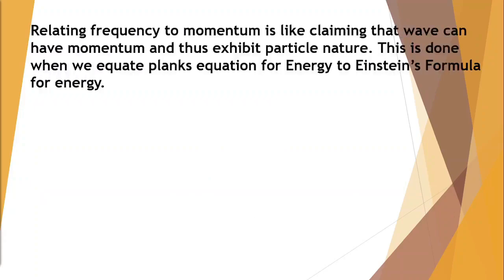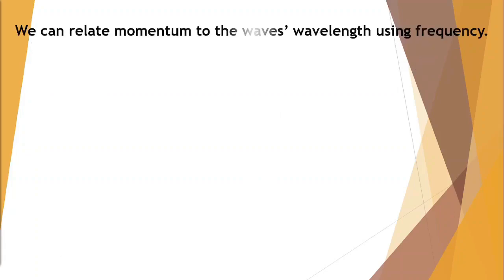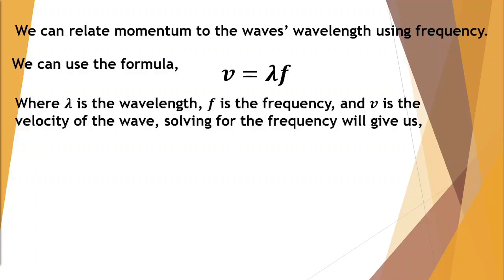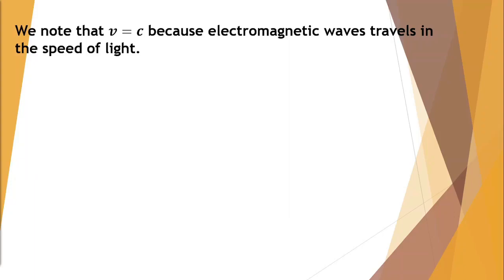Relating frequency to momentum is like claiming that wave can have momentum and thus exhibit particle nature. This is done when we equate Planck's equation for energy to Einstein's formula for energy. We have h*f = p*c. Solving for the momentum p we have p = h*f/c, where c is the speed of light. We can relate momentum to the wave's wavelength using frequency. We can use the formula v = λ*f. Solving for the frequency will give us velocity divided by the wavelength. Plugging this into the formula for momentum we have p = (h/c)*(v/λ). We note that v = c because electromagnetic waves travels in the speed of light.